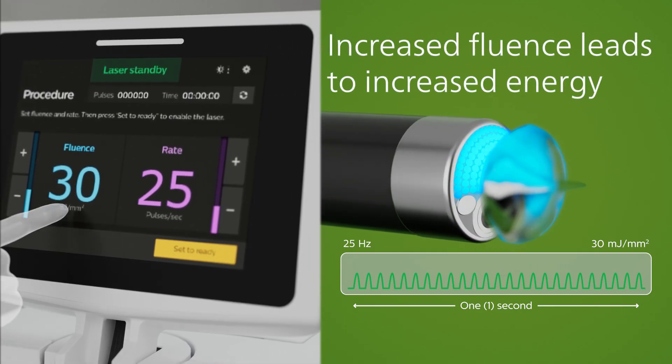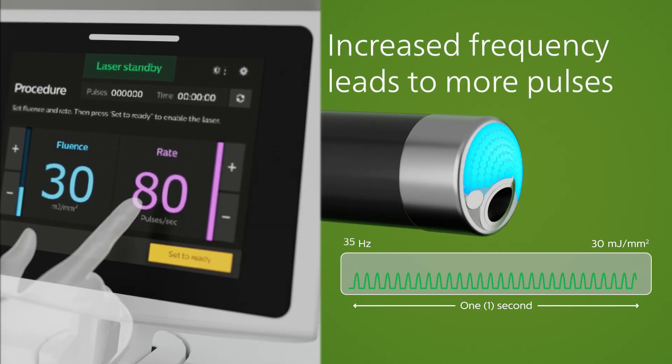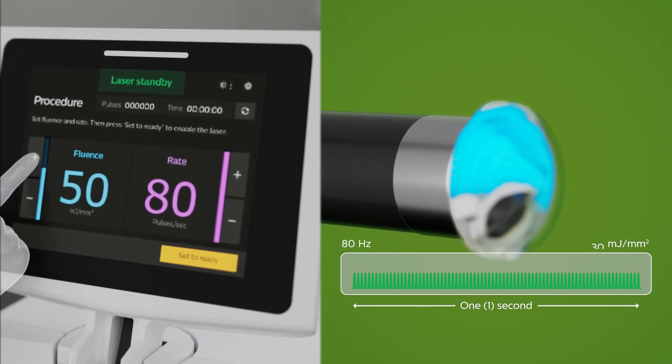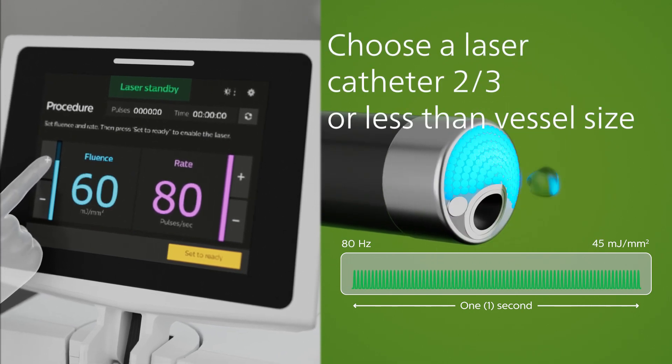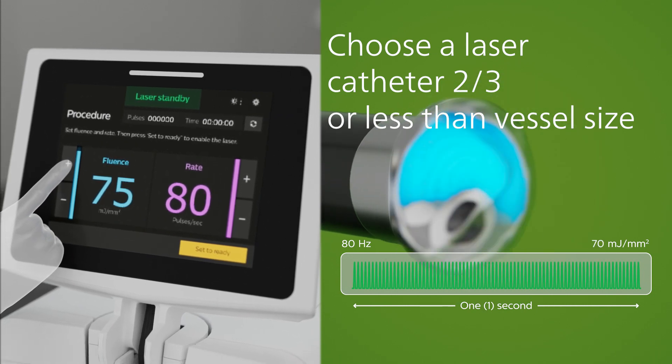Philips Laser Atherectomy has customizable energy density and frequency modes to effectively debulk different morphologies. Fluence is light energy density delivered by the laser to the lesion. Rate is the number of light pulses the laser will deliver per second.